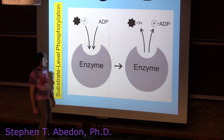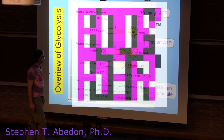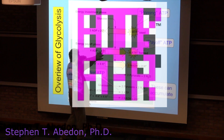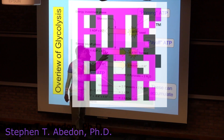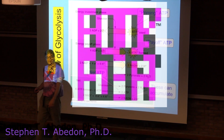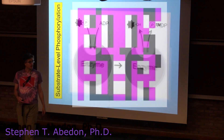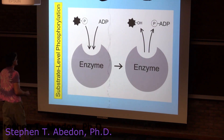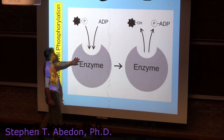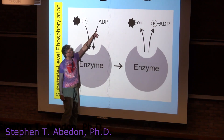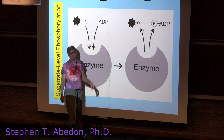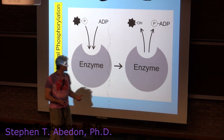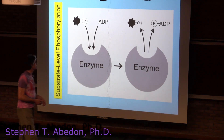Substrate level phosphorylation is actually a very straightforward thing. We have compounds that have phosphates attached; they have to get rid of those phosphates, and the phosphates can be added enzymatically to ADP to make ATP.